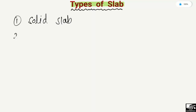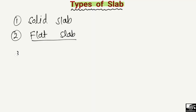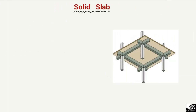In general, there are three types of slabs. The first one is the solid slab — this is the type of slab that is mostly used. The second one is the flat slab; we also see this type of slab in construction, but it is not as common as the solid slab. The third one is the waffle slab system.